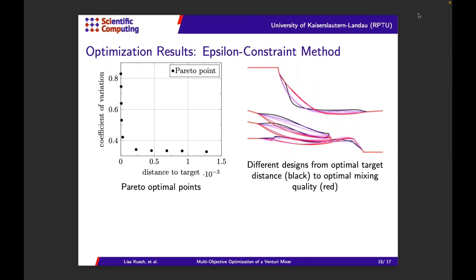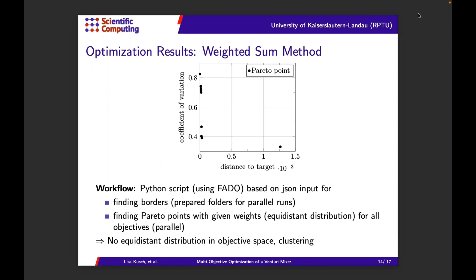On the question of whether the issue with weights is also about scaling of the different objectives: yes, scaling was addressed by determining the two extreme points and dividing by the difference in the coefficient of variation or in the distance to target, so objectives are appropriately scaled. Initially this was not done, and everything was blending because the coefficient of variation has a much higher contribution, leading to always minimizing more or less only the coefficient of variation. Proper scaling is critical, but it works well if you use this difference-based normalization.